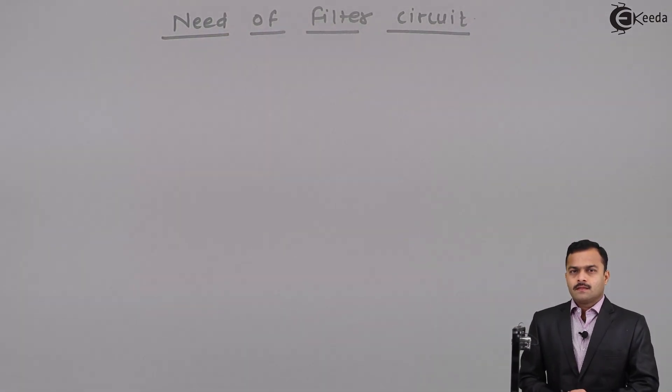The first point, the output obtained by rectifier circuit is not pure DC, it is called as a pulsating DC. What do you mean by pulsating DC? It has some AC component present with useful DC output.